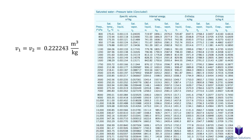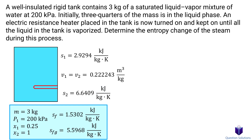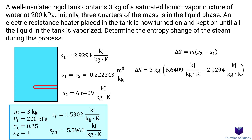The closest specific volume value on the pressure table is right here. Now we look for the entropy value of the saturated vapor — so that's the value right here. Now that we have both entropy values, we can figure out the entropy change by multiplying the difference by the mass. And that is our answer.